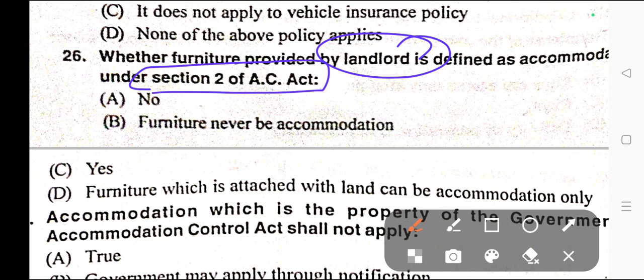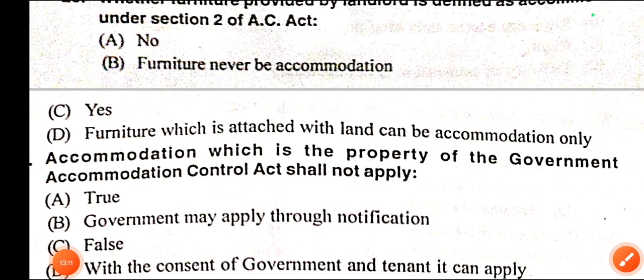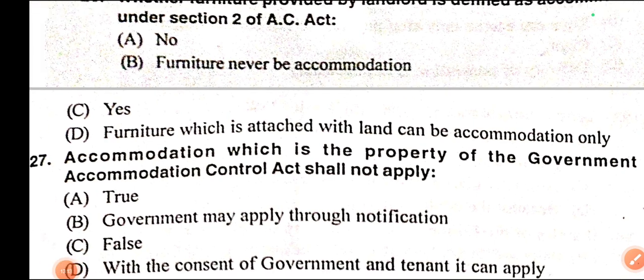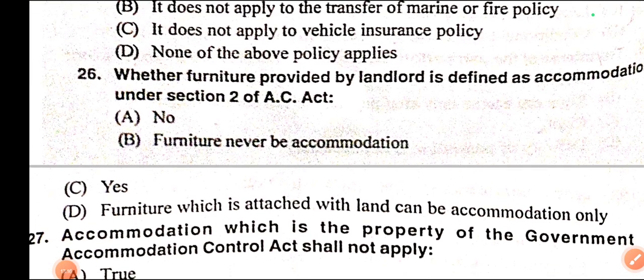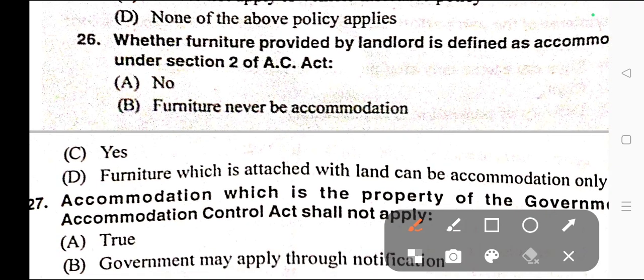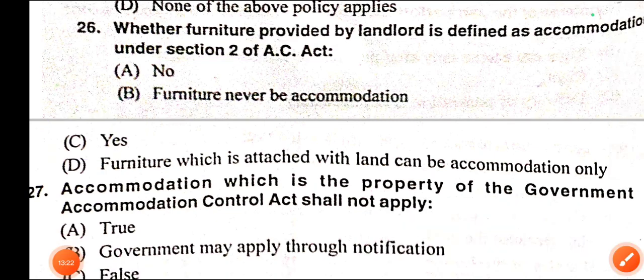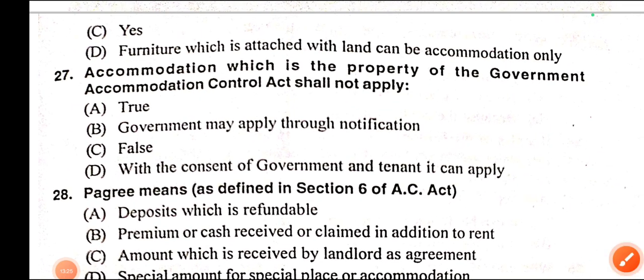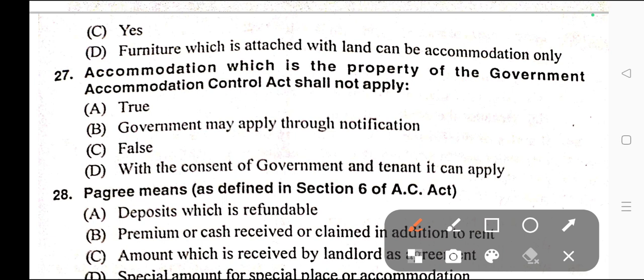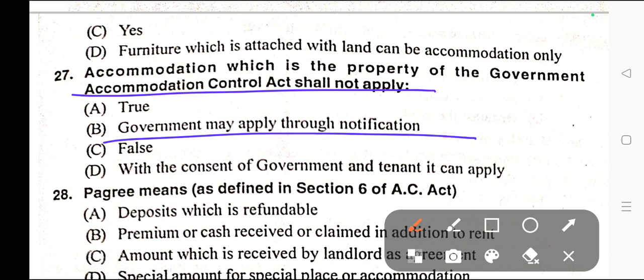Question number twenty-six: Whether furniture provided by the landlord is defined as accommodation under Section 2 of the AC Act? Options: A) No, B) Furniture can never be accommodated, C) Yes, D) Furniture attached with land can be accommodation only. Correct answer is option C — Yes. Section 2 of the AC Act. Question number twenty-seven: Accommodation which is the property of the government — the Accommodation Control Act shall not apply. Options: A) True, B) Government may apply through notification, C) False, D) With the consent of the government and tenant it can apply. Correct answer is option A — True.